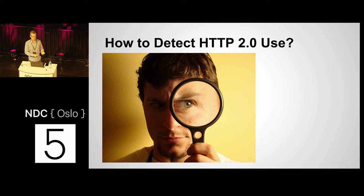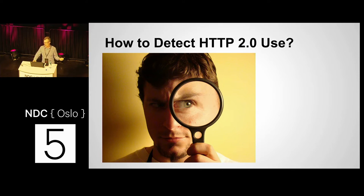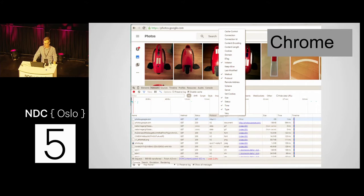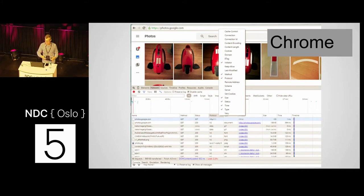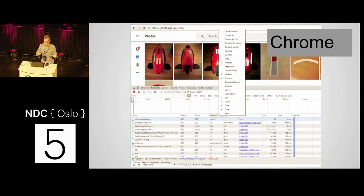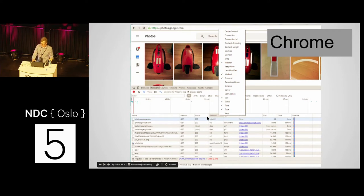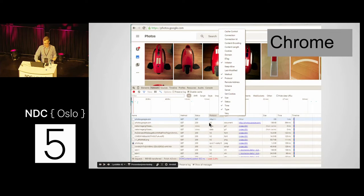So you're a developer and you're thinking: okay, I did everything to make it fast for H2, but how do I know it's using it? It turns out browser makers have done some really good things. When you get into Chrome, press F12 and look at your network connection tab — protocol is not one of the default columns, but you can right-click on the header and select protocol. You can see it shows H2 for photos.google.com.